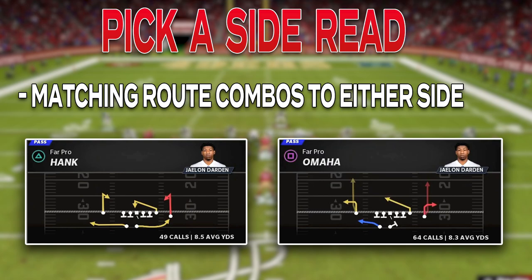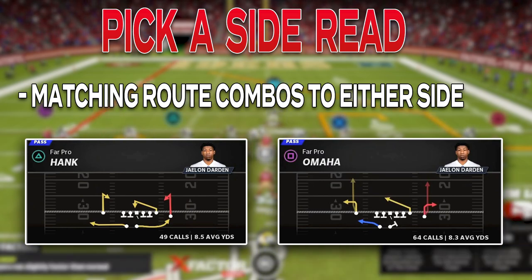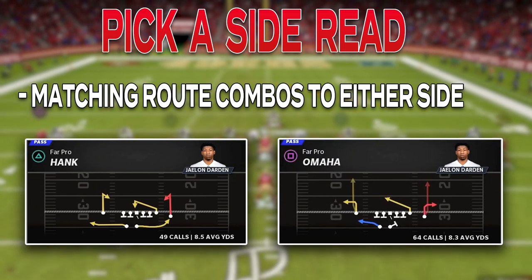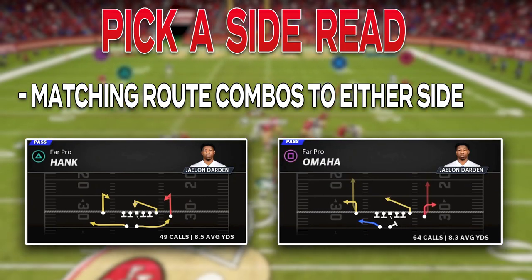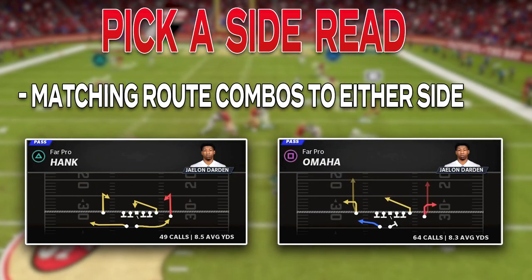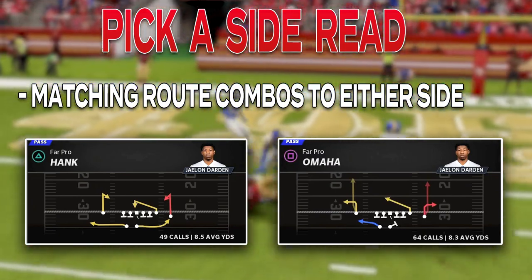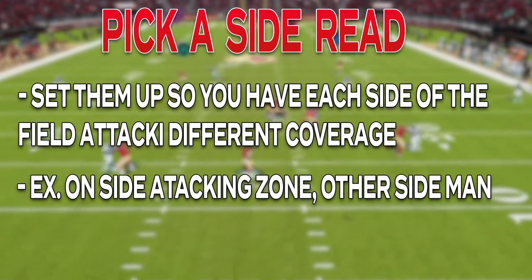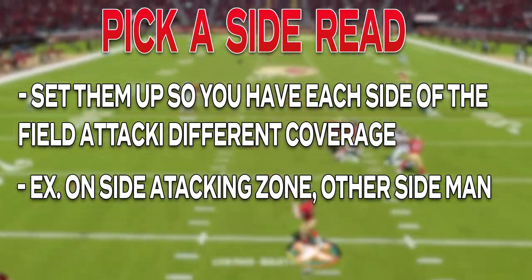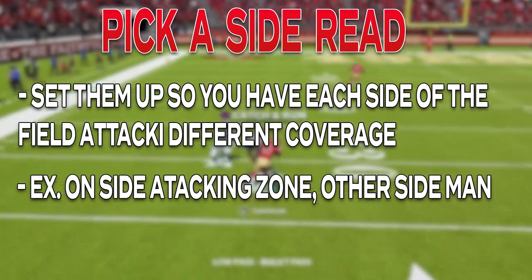Now for pick-a-side reads. These are what you tend to see in youth football — matching route combos on each side of the field like curl-flat or slants to each side. The QB picks a side based on matchup or leverage of the defense. In Madden, I like to set it up with each side of the field designed to attack a different coverage look. This is great if your opponent is keeping you on your toes and you're unsure what coverages they'll call.